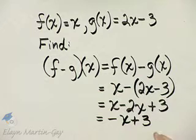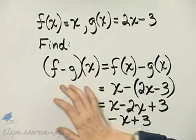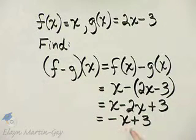Or you can write it as 3 minus x, it makes no difference. But f minus g of x, that new function, is negative x plus 3 or 3 minus x, whichever way you want to write it.